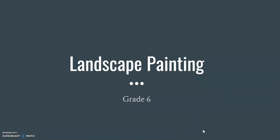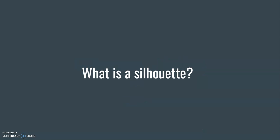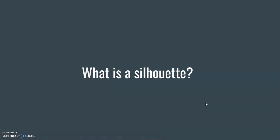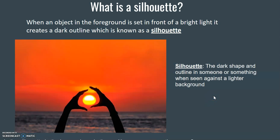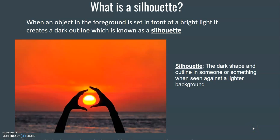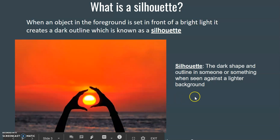All right, so landscape painting. First off, we need to talk about what a silhouette is. A silhouette is basically a dark shape with a contour outline. For example, this picture has two hands and you can't see any details inside. On the right hand you can see a bump on the wrist from a bracelet or watch, but otherwise it's just a dark image with outline and contour lines. That's called a silhouette.